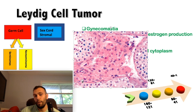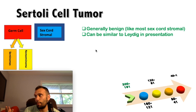The Sertoli cell tumor is also a sex cord stromal tumor and is generally benign. Some are hormonally silent, but if hormonally active and releasing estrogens, it can cause gynecomastia. If it releases androgens, it can cause precocious puberty in young boys, similar to Leydig cell tumor.